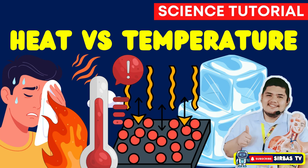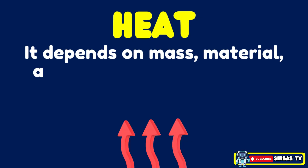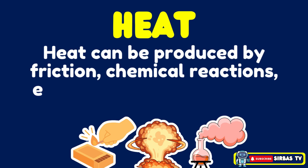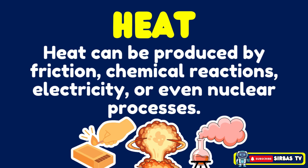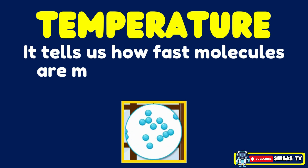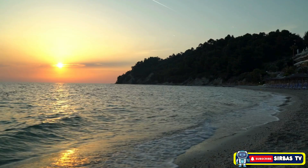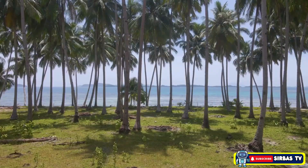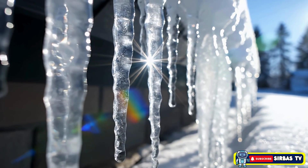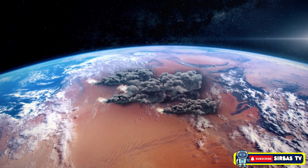Let's quickly recap what we have learned today. Heat is energy in transit — it flows from a hotter object to a cooler one, depends on mass, material, and energy transfer, and is measured in joules or calories. Heat can be produced by friction, chemical reactions, electricity, or even nuclear processes. Temperature is a numerical measure of the average kinetic energy of particles — it tells us how fast molecules are moving, not how much energy is being transferred. Measuring temperature is done with a thermometer. Understanding the difference between heat and temperature helps us explain everyday experiences, like why coffee cools down, why ice melts, or why doctors use thermometers instead of just touching your skin. It also connects directly to cooking, climate, energy use, and even how our bodies stay alive.